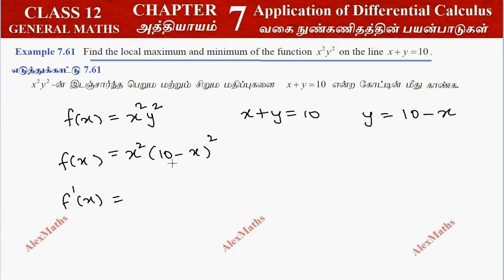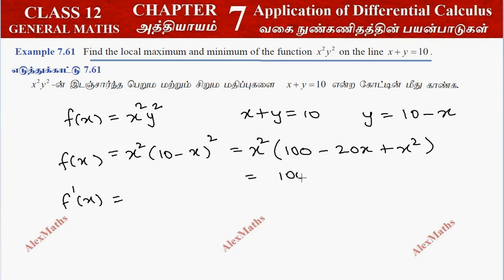This is the expanded formula, which is easier. We expand x squared times the expression: using the minus b whole square expansion, 100 minus 20x plus x squared. So we get 100x squared minus 20x cubed plus x to the power 4.